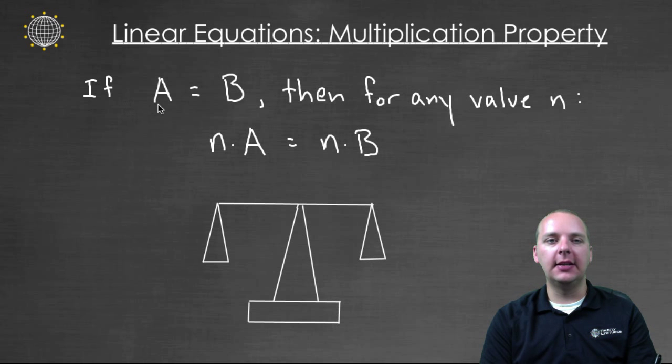It goes something like this: it says if A equals B, and these are expressions, if A equals B, then for any value n, if you multiply the left hand side by n, and multiply the right hand side by n, the equality is maintained.